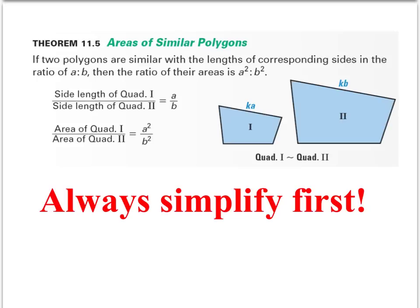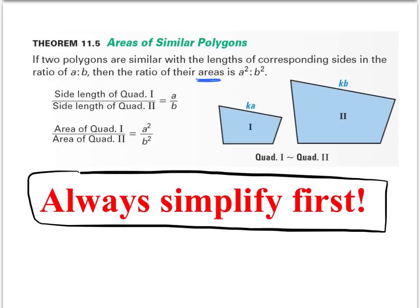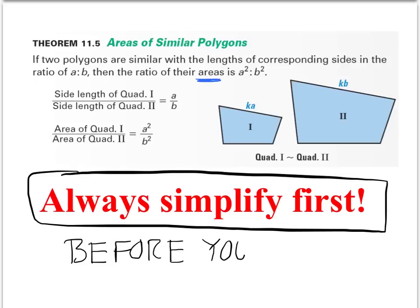Theorem 11.5 talks about the areas of similar polygons. If two polygons are similar with the lengths of the corresponding sides in the ratio of A to B, then the ratio of their areas is A squared to B squared. So if we know the side lengths of two similar polygons, we know the ratio of their perimeters. Important: always simplify first — you always want to simplify before you square.